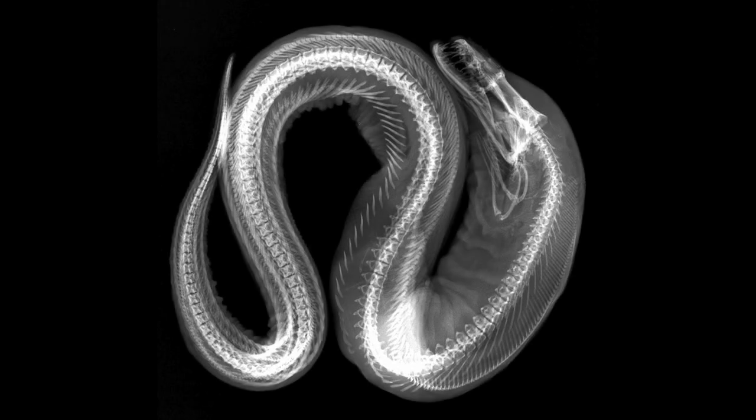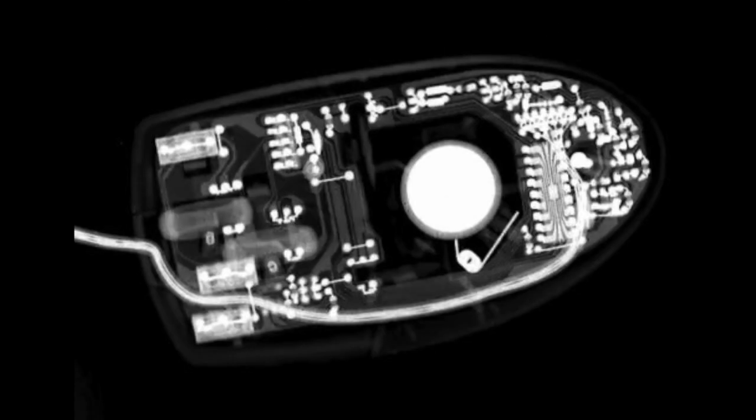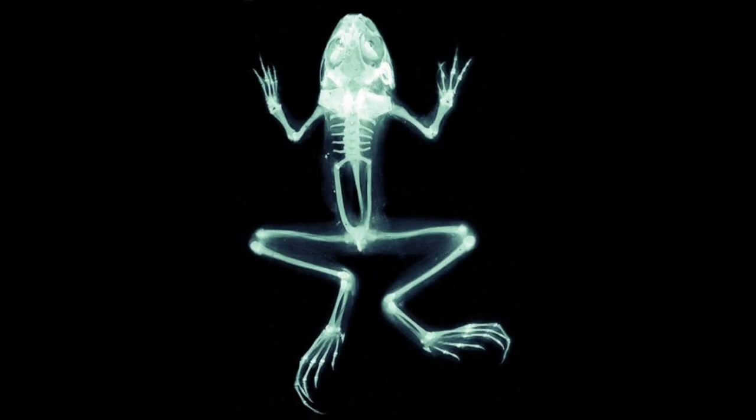Here are some X-ray images produced by others. These are the sort of images that I was trying to produce. Some of these images come from the book Ichthyo: The Architecture of Fish, and from other sources.